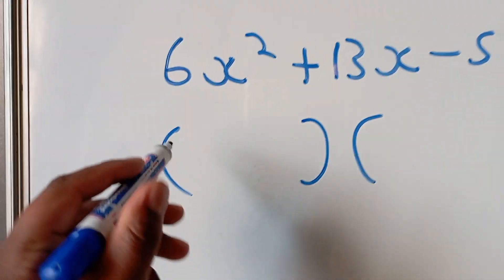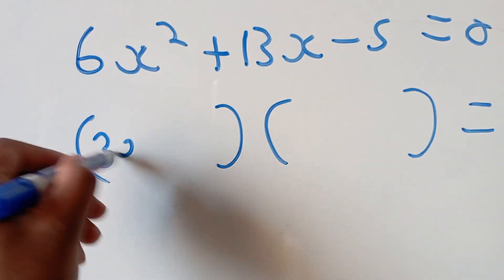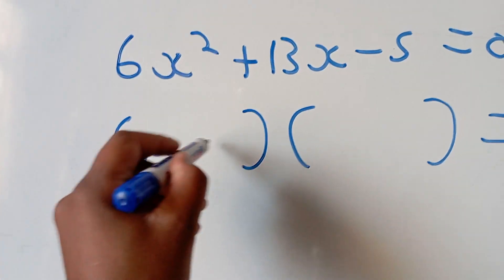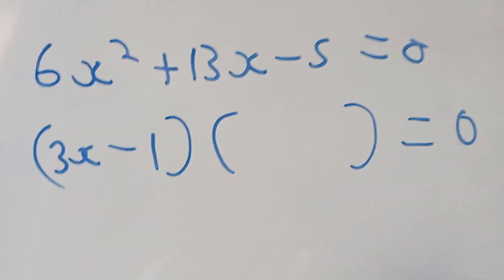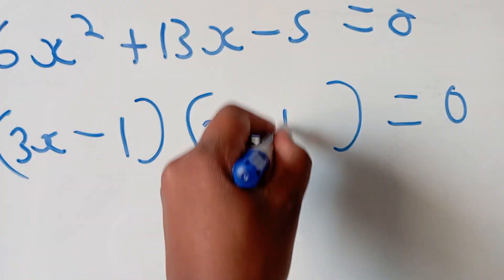Then you're going to factor out 6, which is going to be 3x, and then minus 1, because the factors of 5 is just minus 5 and minus 1, then 2x plus 5.